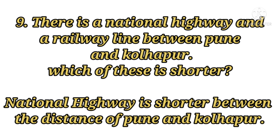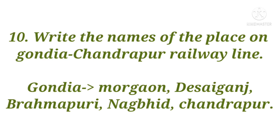Question 9: There is a national highway and a railway line between Pune and Kolhapur. Which of these is shorter? Answer: The national highway is shorter between Pune and Kolhapur. Question 10: Write the names of the places on the Gondia-Chandrapur railway line. Answer: It starts from Murghao, Desaiganj, Brahmapuri, Nagbhed, Chandrapur.